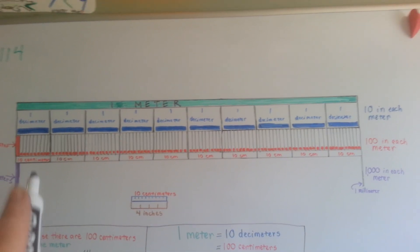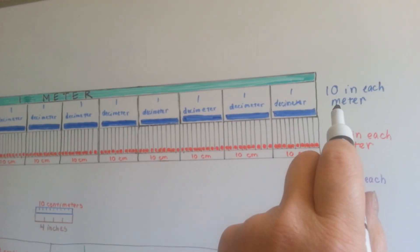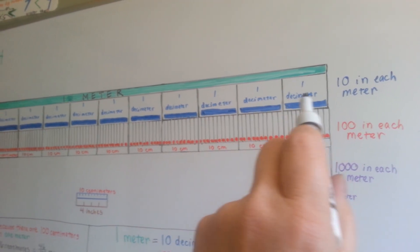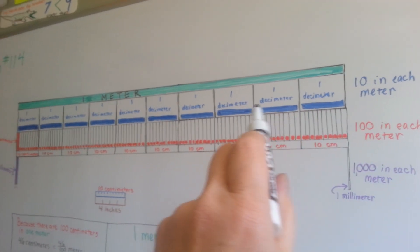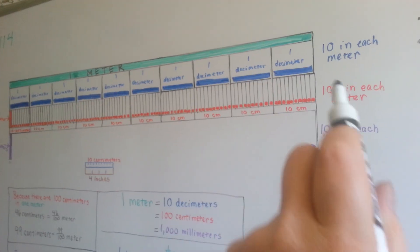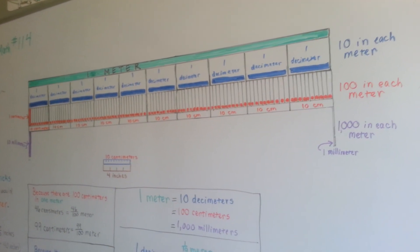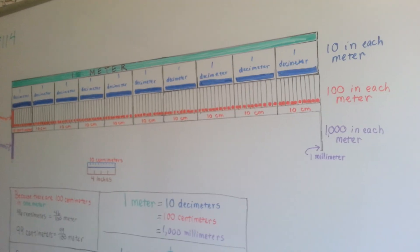When we look at our big drawing here, we can see that there are ten decimeters in each meter. There's a hundred centimeters in each meter, and there's a thousand millimeters in each meter. Millimeters are so tiny, aren't they?